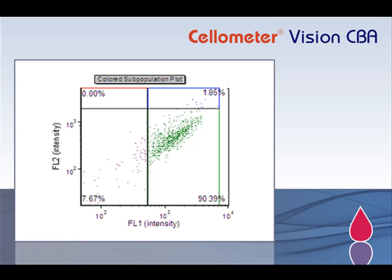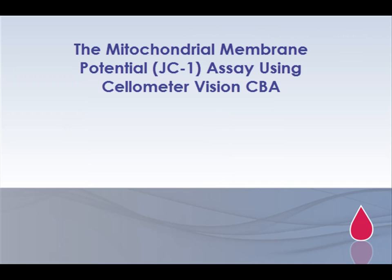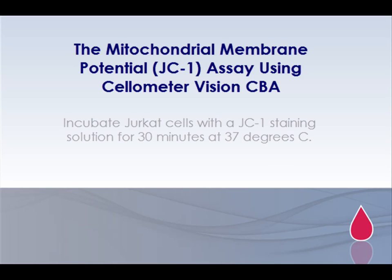Cellometer Vision CBA is a simple, image-based instrument optimized for the analysis of fluorescent cell-based assays. Mitochondrial membrane potential is often used to screen for early-stage cell death.